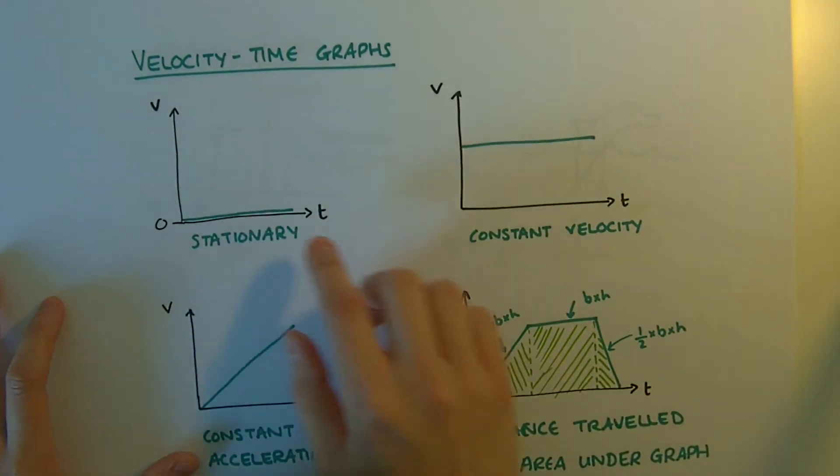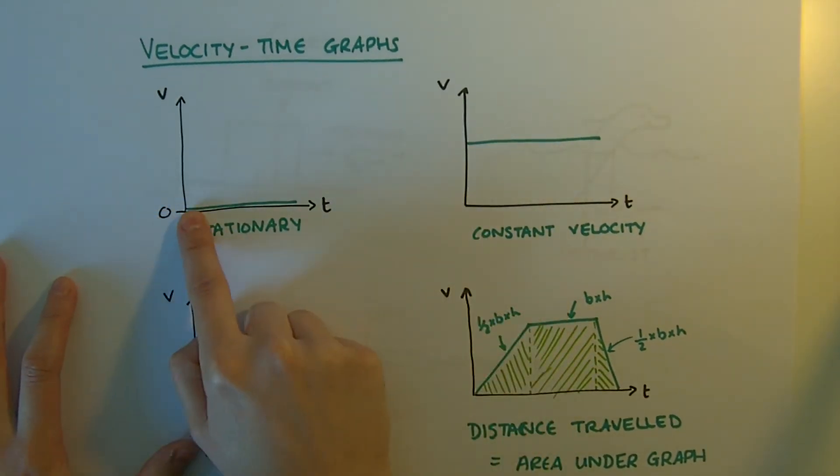Velocity time graphs. Stationary would be zero velocity, so that's a horizontal line down at the zero.